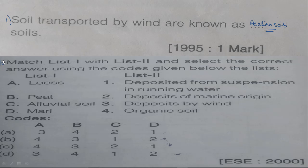The next question is, these types of questions are generally asked in IES as well as GATE. We know that alluvial soils are deposited from suspension in running water. So alluvial soils are transported by running water. C is one. So the answer should lie in B and D. The next is peat. We discussed about peat also. Peat is organic soil. So B will be 4.